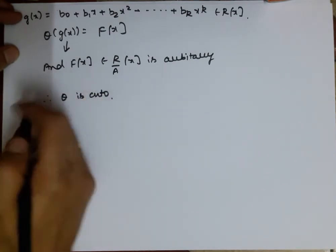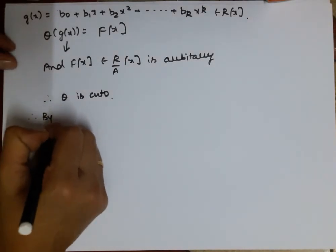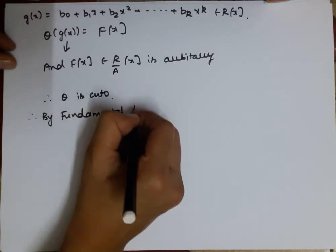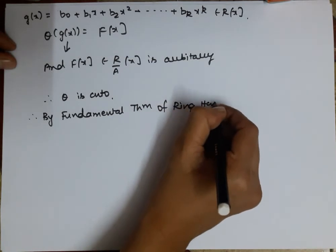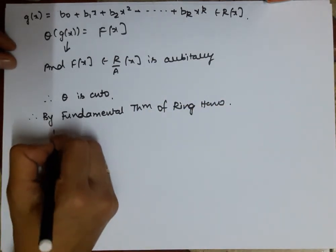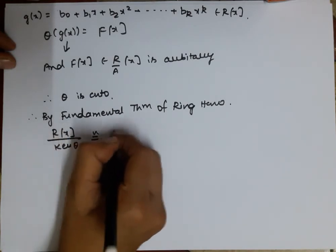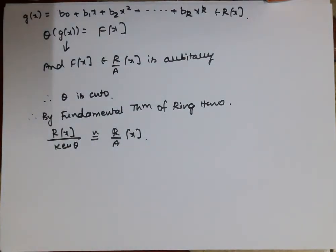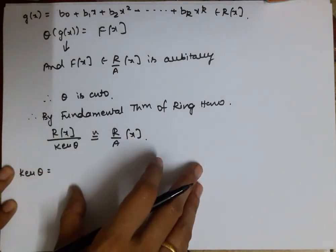Now we have reached the conditions for the fundamental theorem of ring homomorphism. Therefore, by the fundamental theorem of ring homomorphism, R[x]/ker(θ) is isomorphic to R/A[x]. Now we will calculate what ker(θ) is — it will basically come out to be A[x].